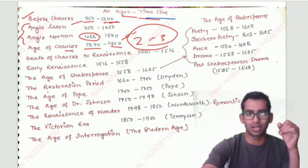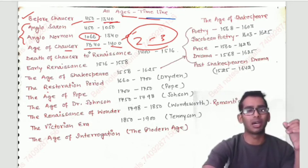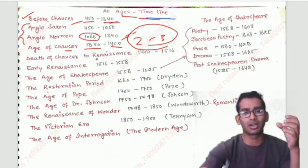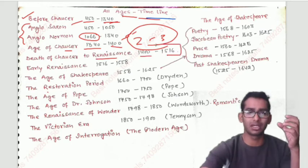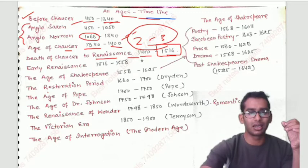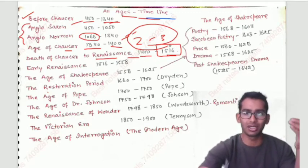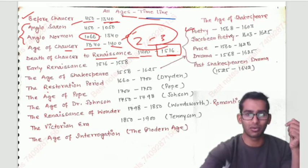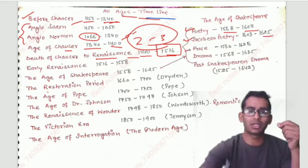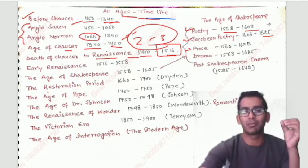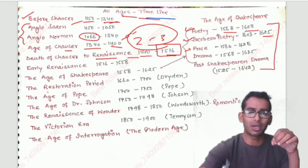After the age of Chaucer comes the Early Renaissance period. Literary historians have divided the Renaissance into parts. The poetry section is 1568 to 1603, Jacobean poetry is 1603 to 1625, and there is also a prose period. These are the subdivisions that literary historians have identified within the Renaissance.